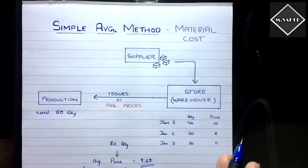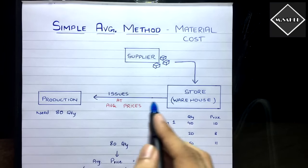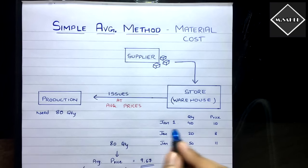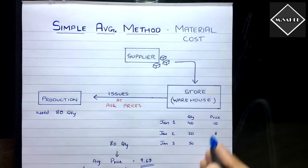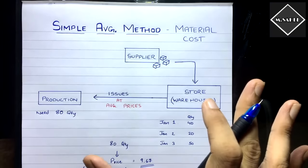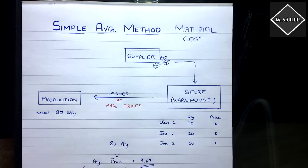Now let's understand what is the Simple Average Price Method. It's very simple — the name says it itself. What will be happening is how the materials will be valued. From the warehouse, materials will be issued to the production department. In FIFO and LIFO we saw there used to be a sequence — in FIFO, first in first out, we used to take prices chronologically. In LIFO it was exactly opposite. But here in the Simple Average Price Method there is no order — everything is in combination.